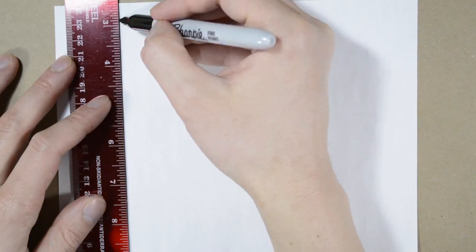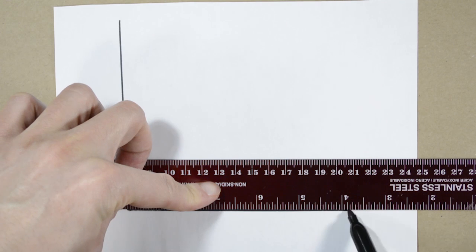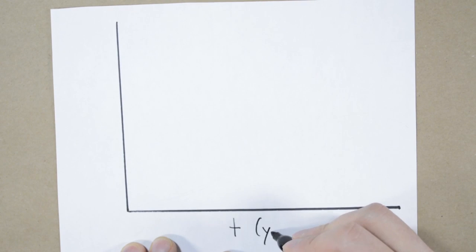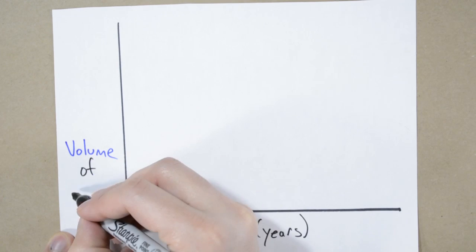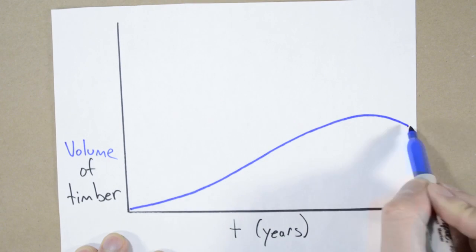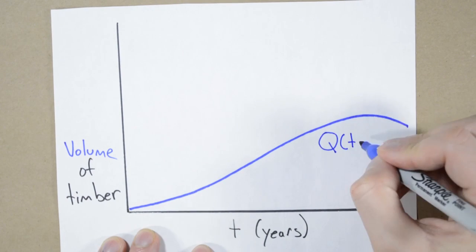First we'll model how the volume of timber grows with time. This bottom axis will be time, t, in years. We're calling this years, but it doesn't matter if it's years or months or whatever. The line should look about the same.